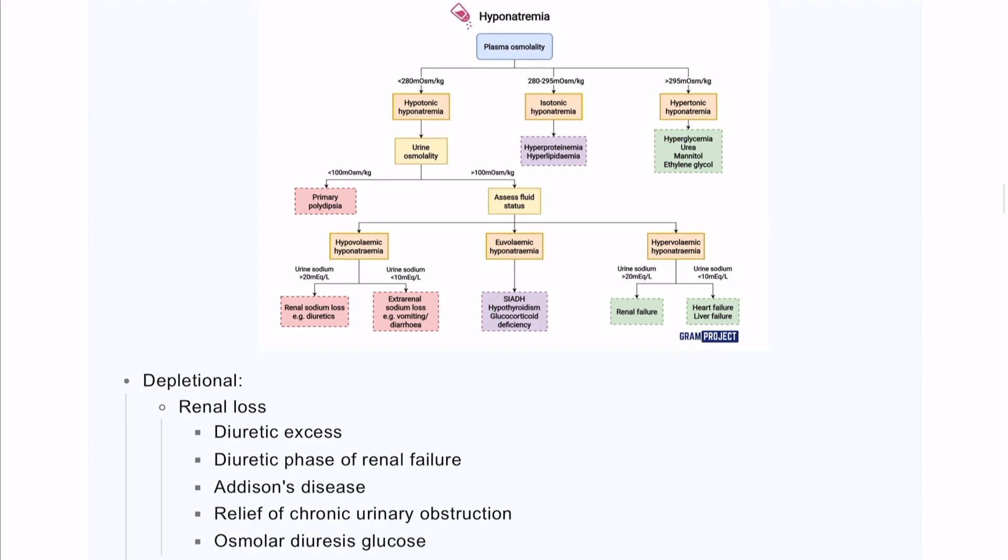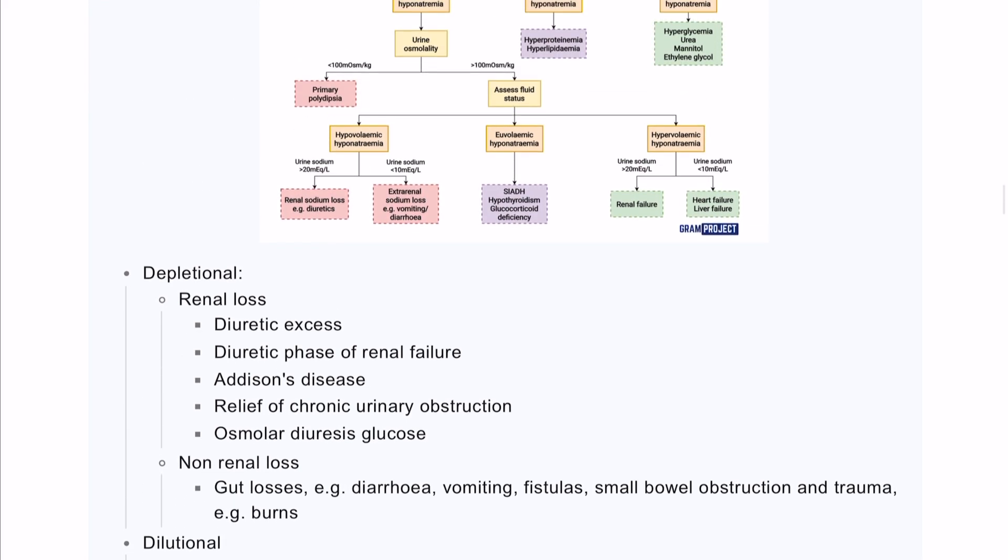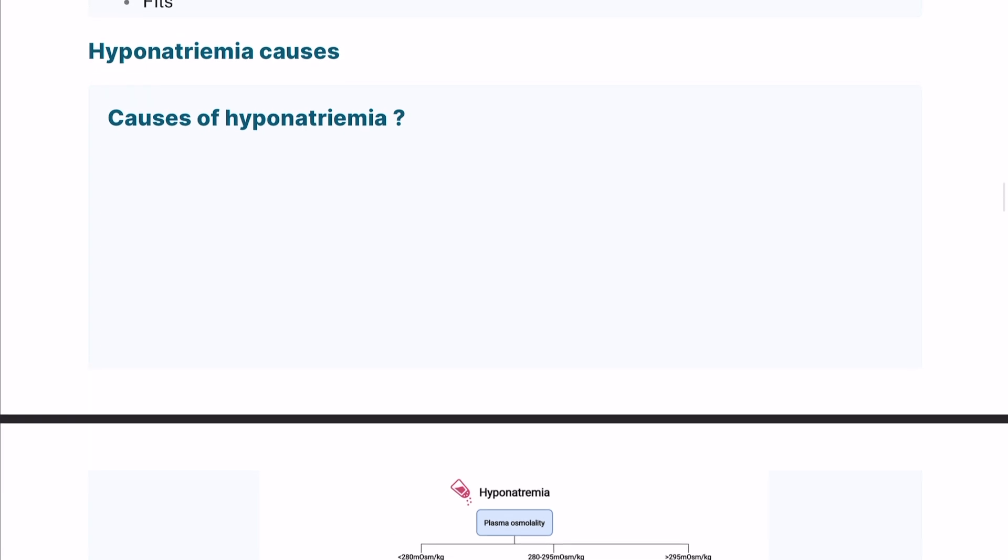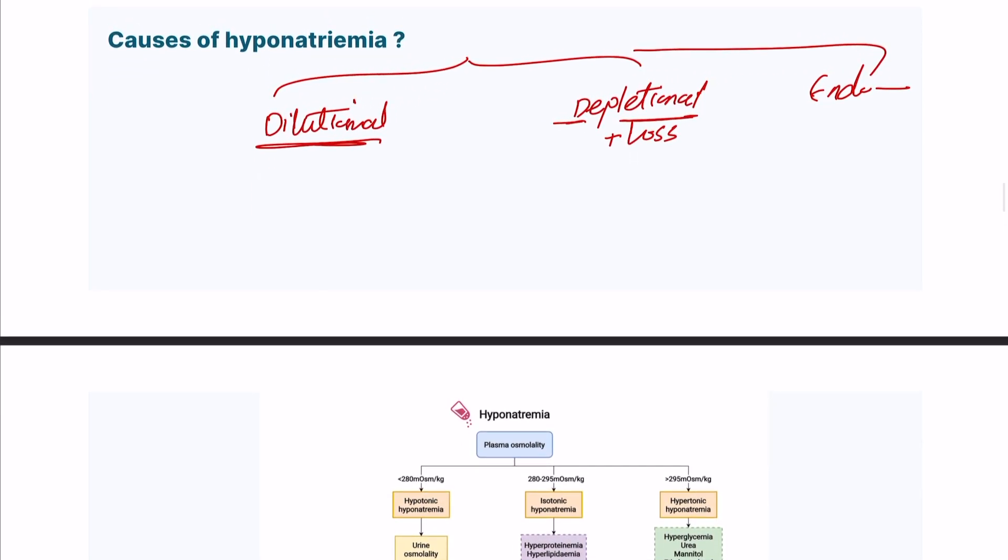The causes of hyponatremia are numerous. I would classify them into dilutional hyponatremia where you have the same amount of salt but very high amount of water, depletional hyponatremia, and endocrinological causes. For depletional hyponatremia, you have increased loss of sodium, which can happen due to renal loss from the kidney or non-renal loss.